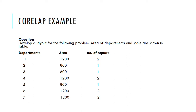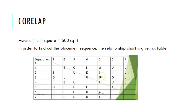We can understand CORELAP by using an example. We have to form a layout of a facility using a given table. In the first step we assume one unit square equals 600 square feet. To find the placement sequence, the relationship chart is provided. We can see the relationship between departments: department 1 and 2 is E, department 3 and 2 is U, department 4 and 3 is U, and so on. We calculate the relationships between all the departments.